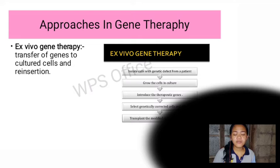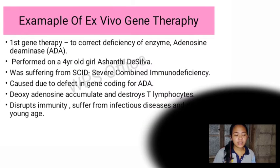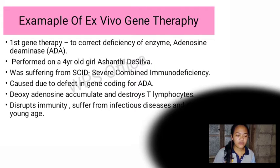There are two approaches of gene therapy: ex vivo gene therapy and in vivo gene therapy. Ex vivo gene therapy involves the transfer of genes into cultured cells and their insertion. An example is the first gene therapy performed to correct deficiency of the enzyme adenosine deaminase, performed on a four-year-old girl, Ashanti de Silva, who was suffering from SCID — severe combined immunodeficiency — caused by a defective gene coding for ADA.